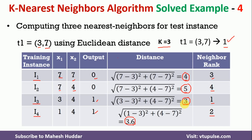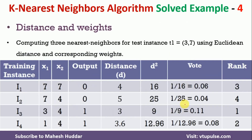The procedure up to distance calculation is the same. We first calculate the squared distances: 4²=16, 5²=25, 3²=9, and 3.6²=12.96. Then we calculate the inverse of these squared distances: 1/16 = 0.06, 1/25 = 0.04, 1/9 = 0.11, and 1/12.96 = 0.08.